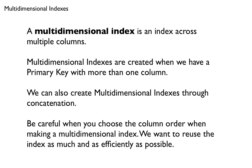When we have more than one column in a primary key, or in other words, a composite key, we now have a multidimensional index. We can also create a multidimensional index through a concatenation. Essentially, this means we are creating one index across multiple columns.